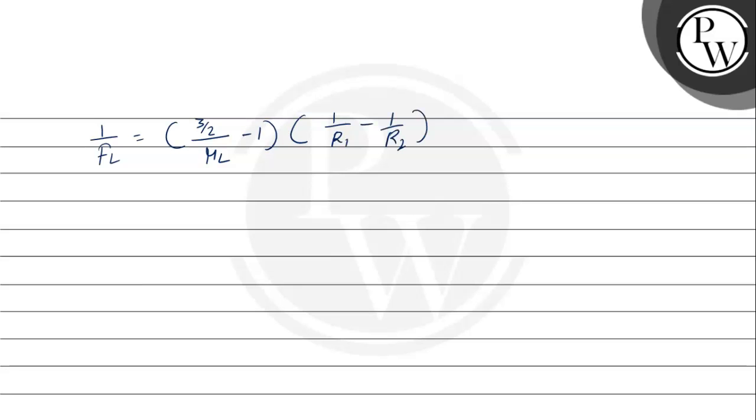Dividing equation 1 with equation 2, so we can see that F_l by F_a equals 3 by 2 minus 1, and now we have 3 by 2 by mu_l, which we can write as 3 by 2 mu_l minus 1.